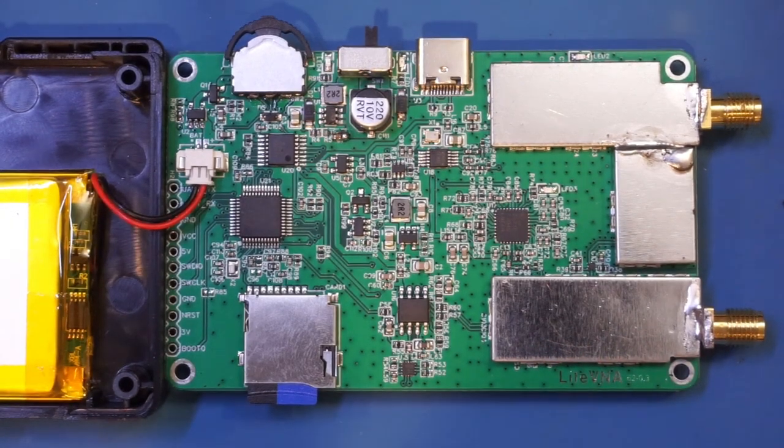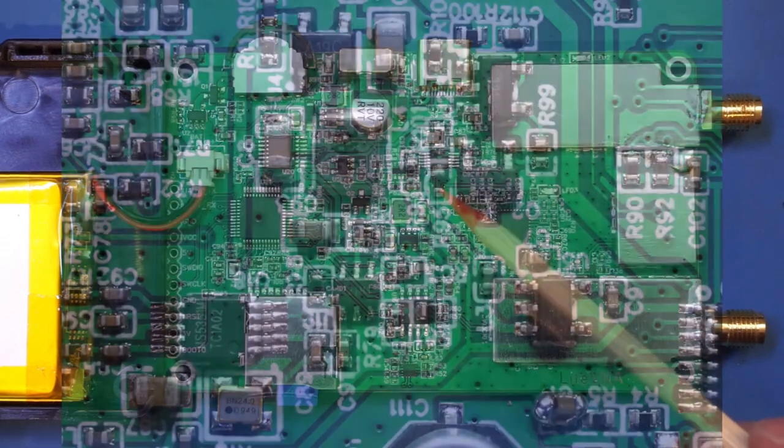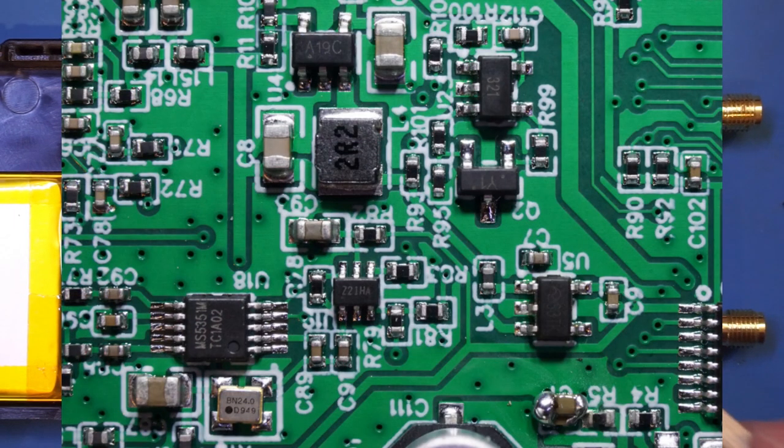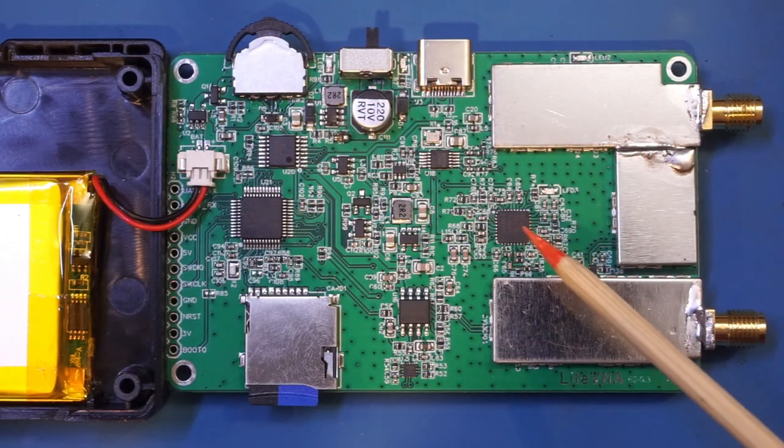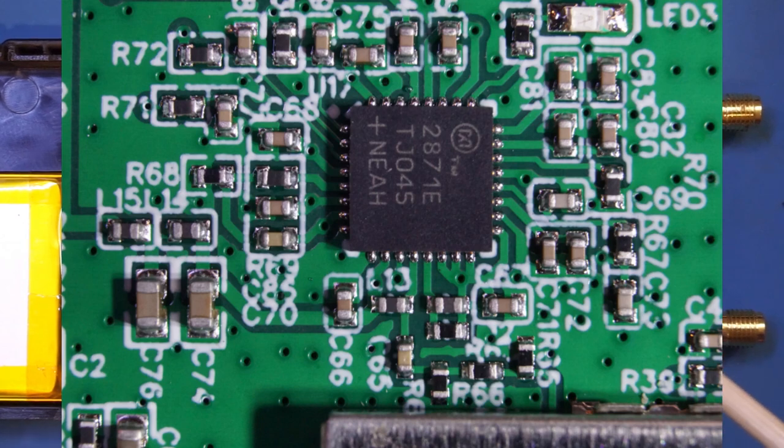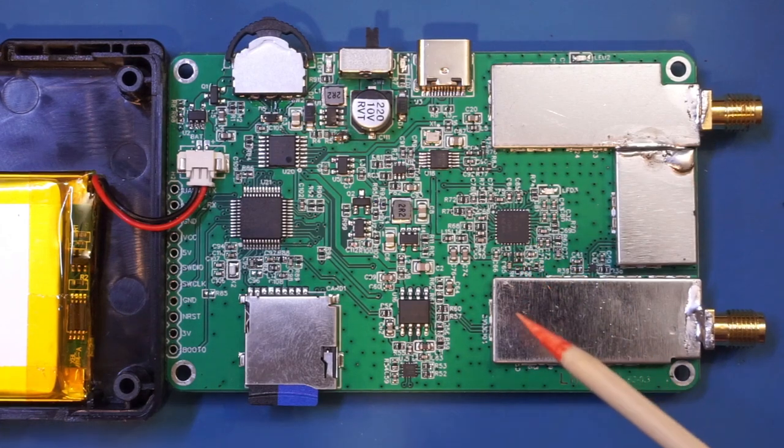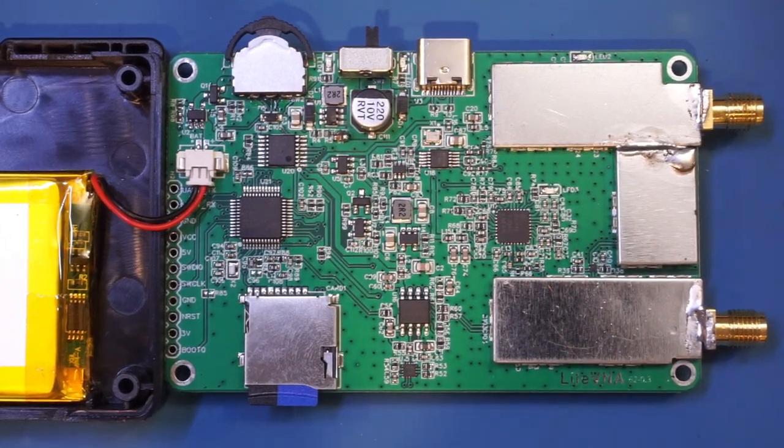This chip underneath the USB port is a Si5351, which is a clock generator. Finally, this larger QFN chip is an ADF4371E, which is a 23.5 megahertz to 6 gigahertz synthesizer and VCO chip. That wraps up this video.